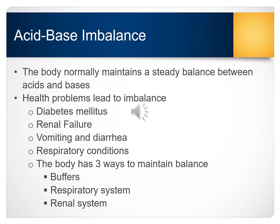The body normally maintains a steady balance between acid produced during metabolism and bases that neutralize and promote the excretion of acids. Typically your body does this independently, but there are some health problems that can lead to imbalances in the acid-base balance. Common health problems include diabetes, renal failure, vomiting and diarrhea, and respiratory conditions — a common one would be COPD, chronic obstructed pulmonary disease. But the body has three ways it tries to maintain balance: through buffers, the respiratory system, and the renal system.